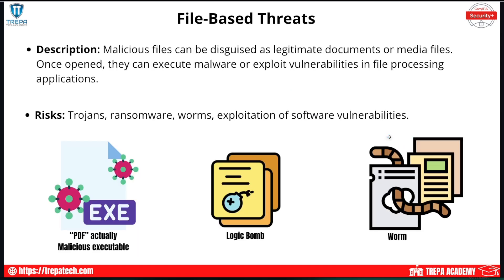File-based threats involve malicious files disguised as legitimate documents or media files. The most basic example: a file is named 'yourfile.pdf' but is actually a .exe — you open what you think is a PDF and you've just run a virus. The risks include trojans, ransomware, and worms, all of which exploit software vulnerabilities. These are file-based threats, meaning the malware gets installed on your system, taking up storage as an actual file.